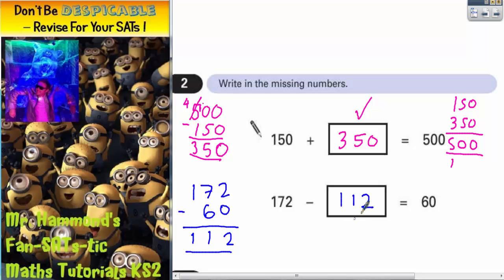Let's just double check that one. So we've got 172 take away 112. So we've got 2 take away 2 is nothing, 7 take away 1 is 6, and 1 take away 1 is nothing. So that does indeed equal 60. Therefore 112 is correct.